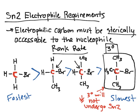One thing I forgot to mention: the electrophilic carbon is generally referred to as the alpha carbon. Carbons next to it are referred to as beta carbons. So those are your alpha and beta carbon designations.